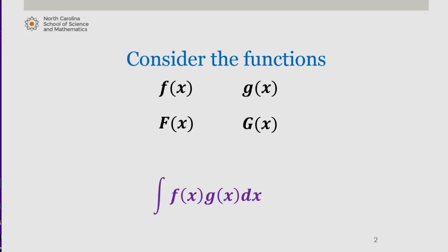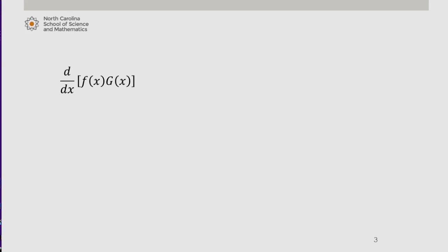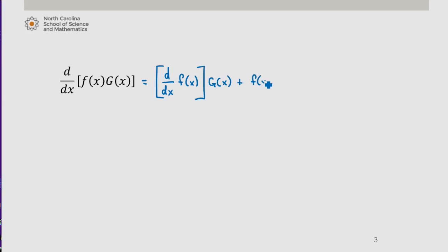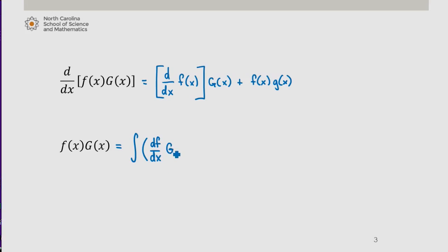Consider the product of f of x and capital G of x. Differentiating the product of these two functions requires the use of the product rule, and this is equal to d/dx of f of x times capital G of x plus f of x times g of x. This then implies that f of x times capital G of x is equal to the integral of df/dx times capital G of x plus f of x times g of x, dx.